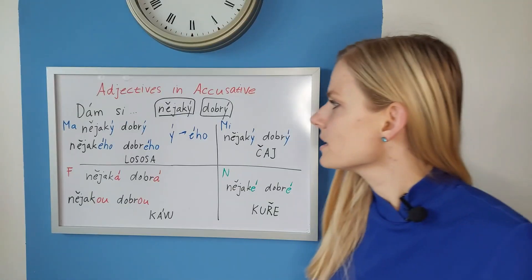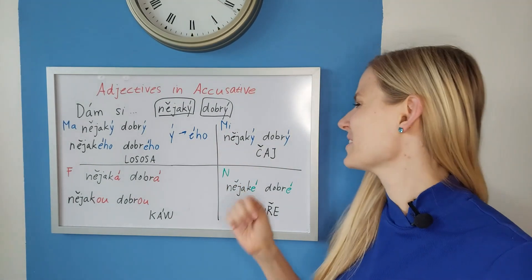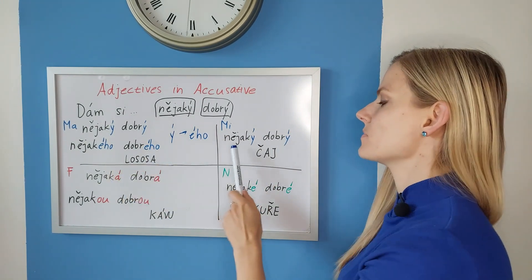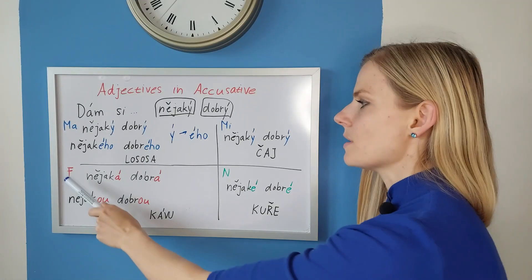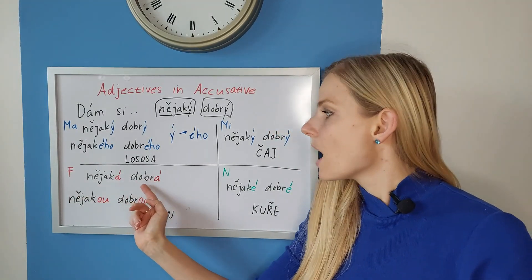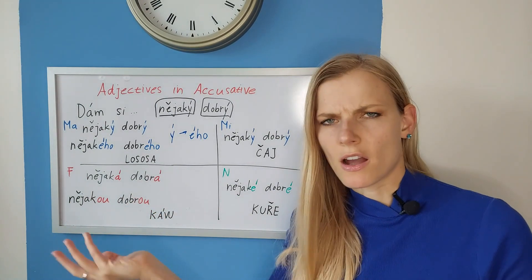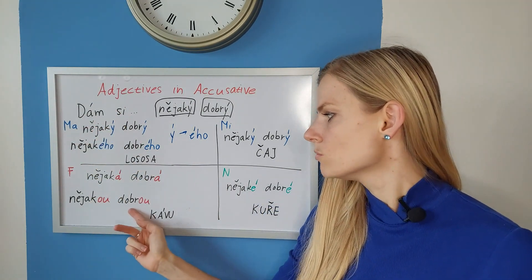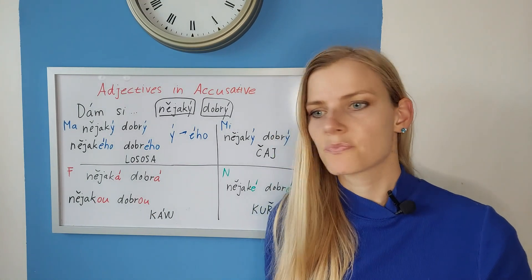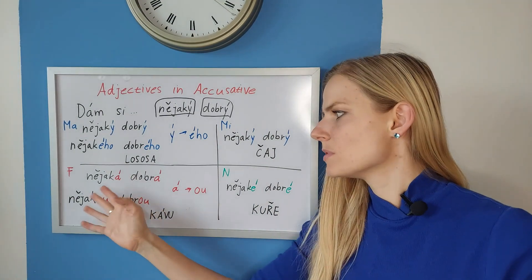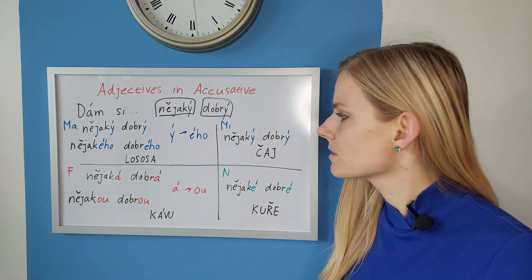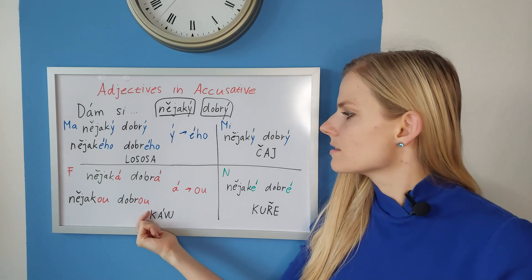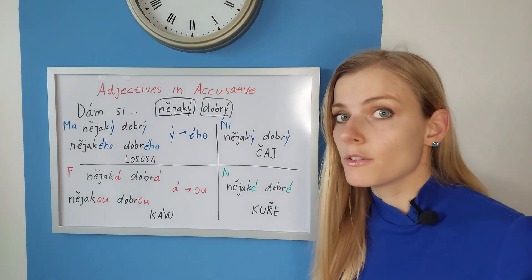Now let's see what happens with masculine inanimate — nothing. So if you say 'I'll have some good tea,' you would say Dám si nějaký dobrý čaj. Exactly the same. The feminine changes. Nějaká dobrá káva would be the nominative — To je nějaká dobrá káva, 'this is some kind of good coffee.' In the accusative: Dám si nějakou dobrou kávu. Even if the noun doesn't change, like mrkev, the adjectives still change.